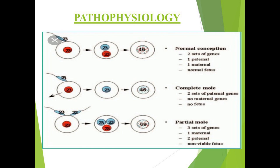In the partial mole, the maternal egg has its own 23 pairs of chromosomes, which are fused by two sets of paternal sperm. This results in 69 chromosomes total. Because both parents' chromosomes are present, fetal tissues do form, but they are non-viable. That is how the complete mole and the partial mole are formed.